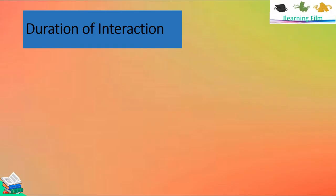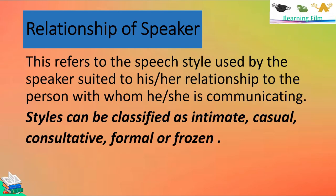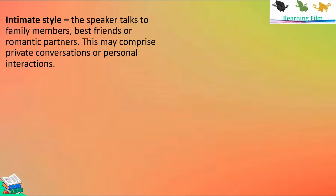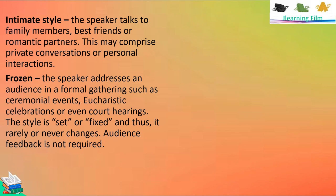The second element is duration of interaction. When we engage in a certain conversation, there is always a duration of interaction. The third is relationship of speaker — this refers to the speech style used by the speaker suited to his or her relationship. For example, intimate style: the speaker talks to family members, best friends, or romantic partners — this is usually the most informal style. Then there is frozen style: the speaker addresses an audience in a formal gathering such as ceremonial events, recursive celebrations, or court hearings. The styles are fixed and thus rarely or never change. Audience feedback is not required — this is the most formal type of communication.